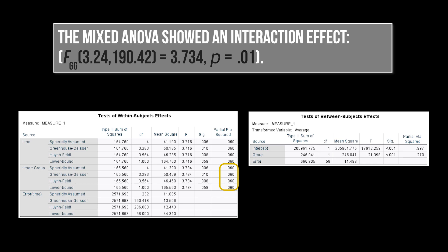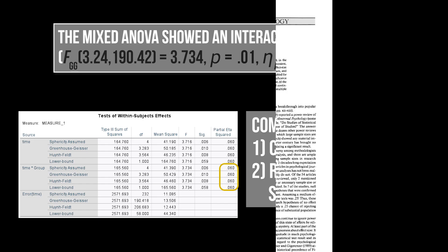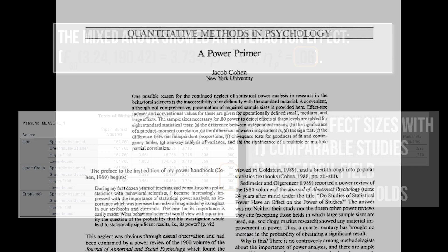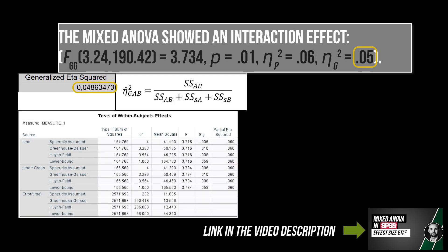The effect size, usually the partial eta squared, should also be reported and classified, primarily using comparable studies, research field specific thresholds or Cohen 92. A generalized eta squared can also be helpful. I've shown its calculation and interpretation in the linked video if you are interested.